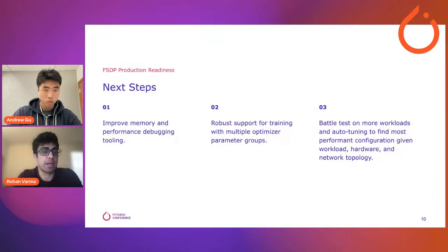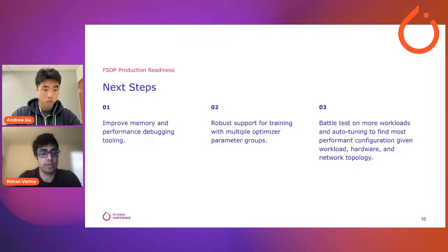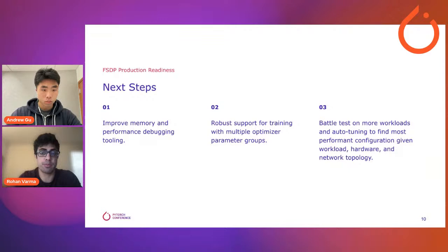Finally, some next steps and plans for FSDP. First, we want to improve memory and performance debugging tooling — it's quite hard for users today to understand the performance characteristics of their FSDP application and how to improve it. We also want to harden different features for FSDP, such as providing robust support for training with multiple optimizer parameter groups. Finally, we're looking to battle test FSDP on more workloads from various domains and build out auto-tuning APIs to find the most performant configuration given a user's workload, hardware, and network topology — automating what currently requires manual experimentation.